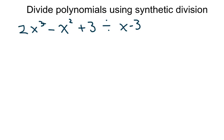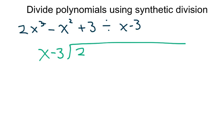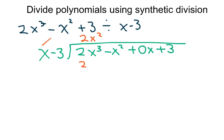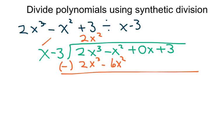So very quickly, if I were to do long division on this, I would do x minus 3 goes into 2x cubed minus x squared. We don't have an x term, so I'm going to put plus 0x, then plus 3, and we're trying to find the quotient and the remainder. We ask ourselves what times x gives me 2x cubed — that's 2x squared. So you multiply and get minus 6x squared, then subtract, and that term goes away.